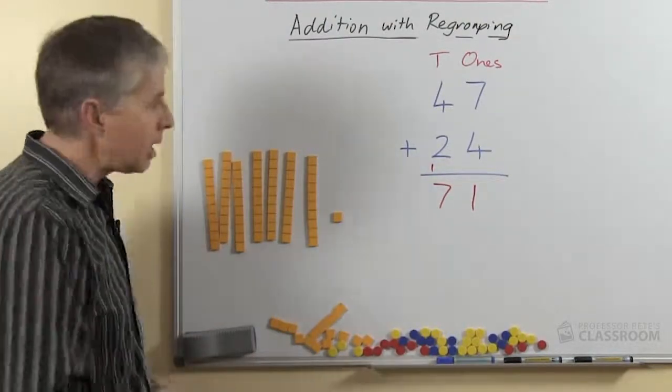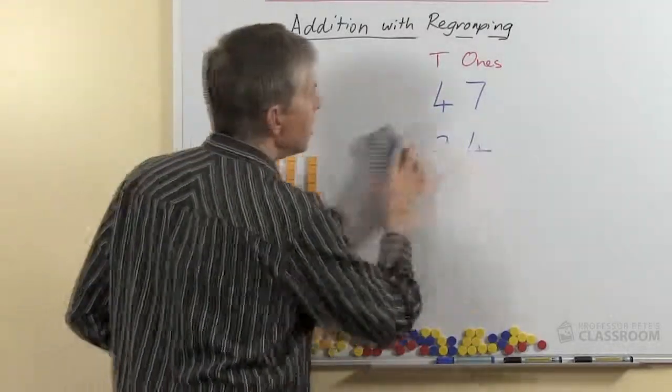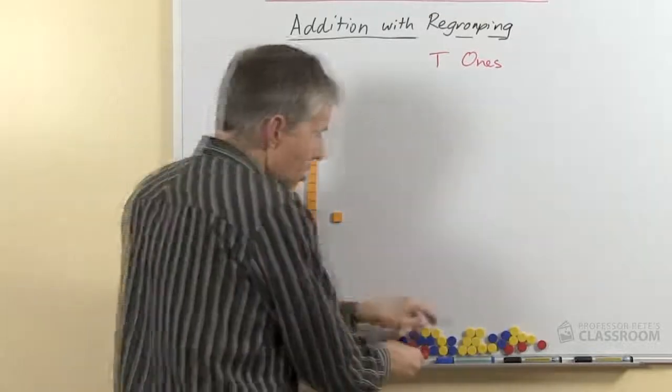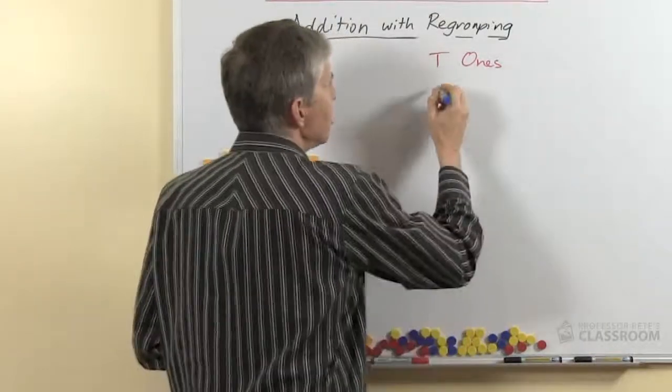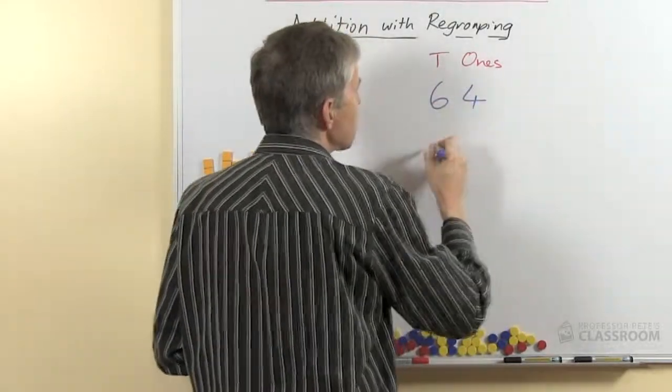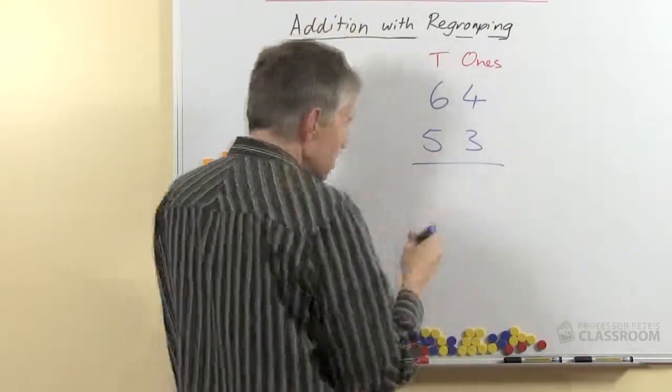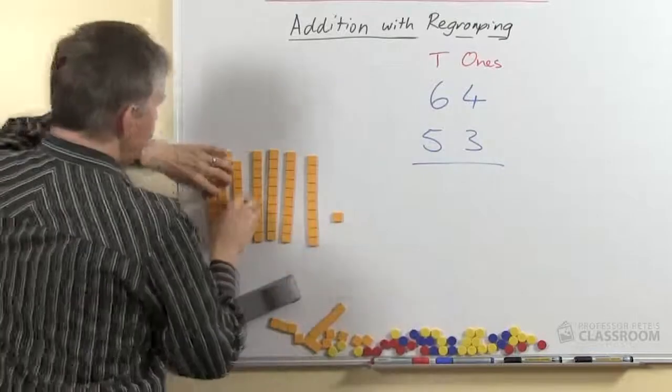I'm going to show you a slightly more difficult example because sometimes we have bigger numbers and we go over a hundred. So this is a more advanced question. So let me start with what shall we do here? 64 plus 53.